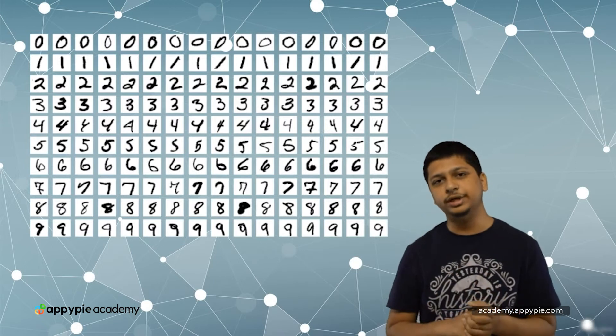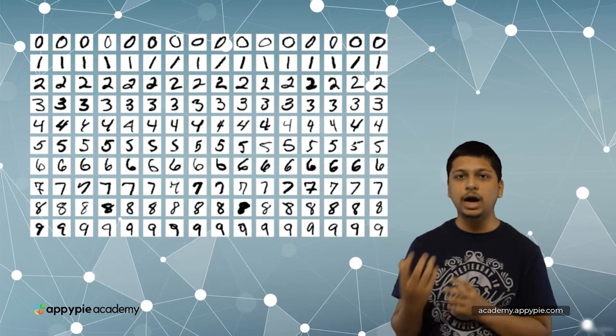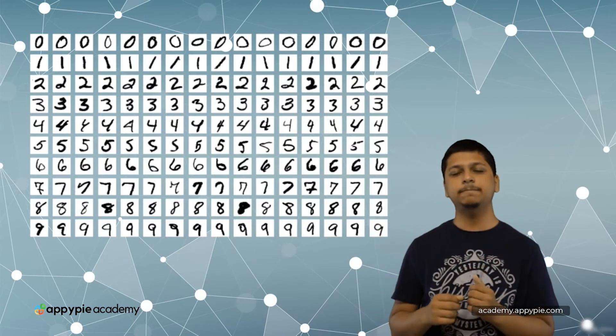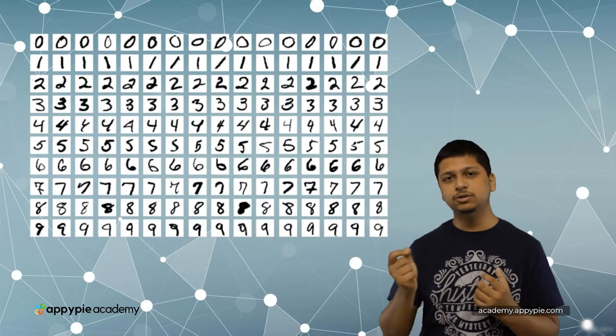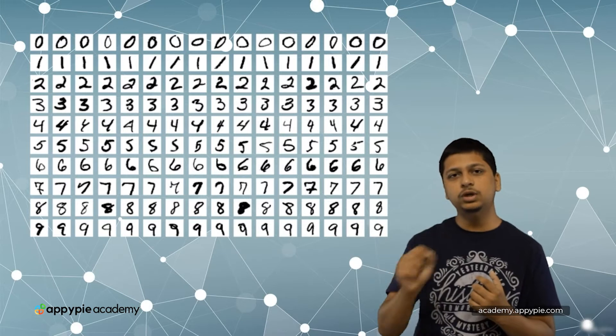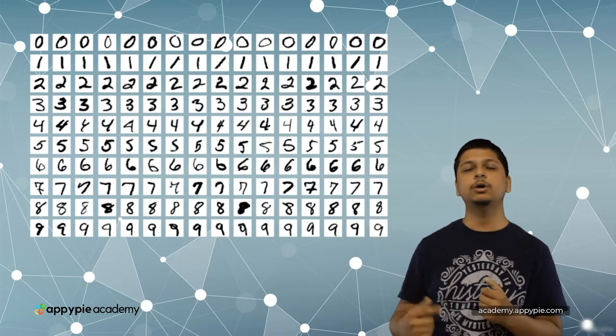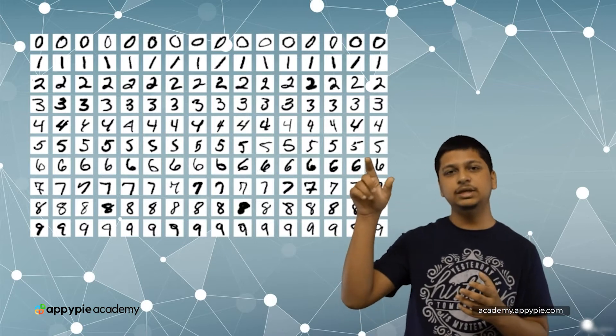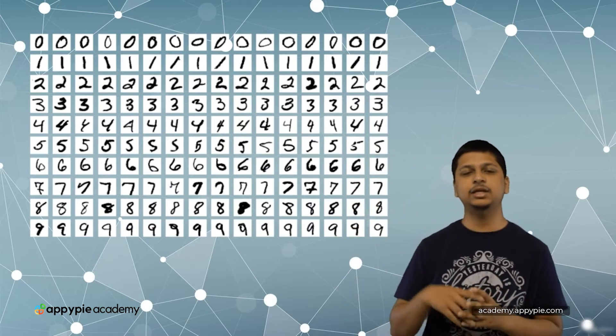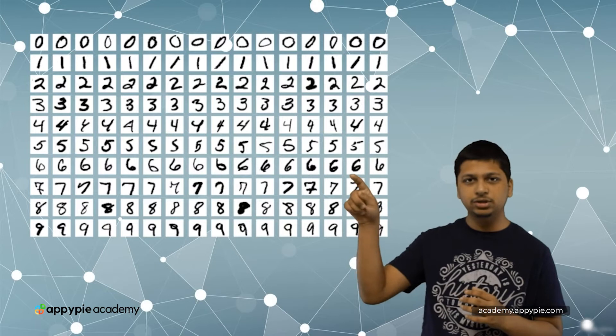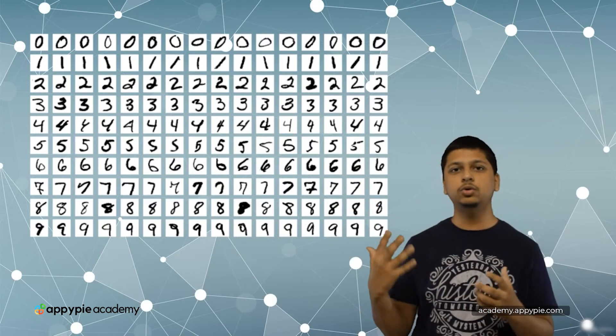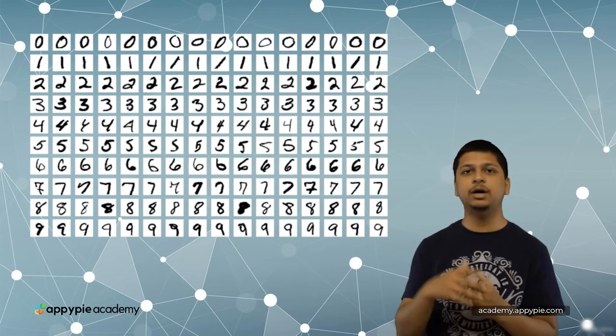There are two ways to do it. The first one is to hard-code the characteristic of each and every number. An 8 comes by drawing two curves. A 1 is a straight line. A 9 is a curve and a straight line. A 7 is a horizontal line and a slanting line. You can go on and on hard-coding different rules about different digits.